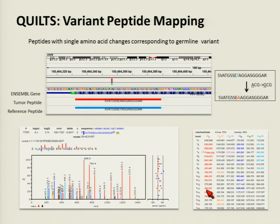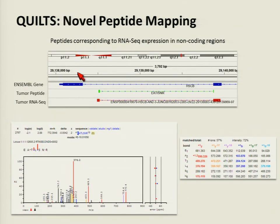In addition to the genome-wide view, we can focus on specific variant peptides identified using our sample-specific database. Here you can see a peptide with a single amino acid change corresponding to a variant — identified in our global proteome analysis — where the variant causes an amino acid sequence change from T to A in the genome browser. This peptide would not have been identified without our tumor-specific database. We can also look at peptides showing expression in non-coding regions: an Ensembl reference gene's first exon appears to start in an intronic region in the RNA-seq, and we identified a tumor peptide consistent with this RNA expression.